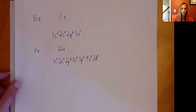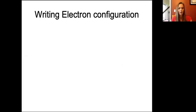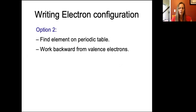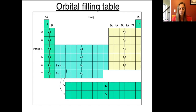Now let's look at the other way to write electron configurations. You find your element on the periodic table and work backward from the valence electrons, remembering that s orbitals are accounted for in the first two columns, p orbitals in the last six columns, d orbitals in the middle block, and f orbitals are those two rows pulled down under the periodic table. We're going to look at silicon and strontium as examples.